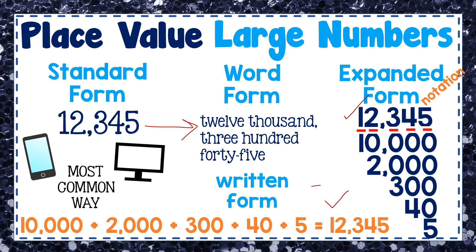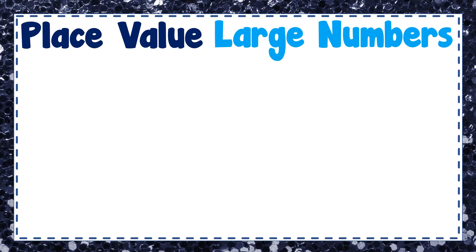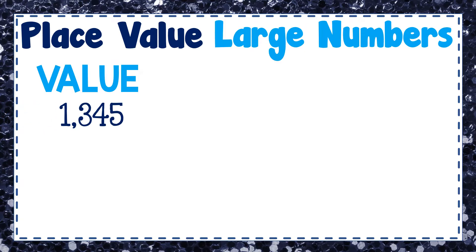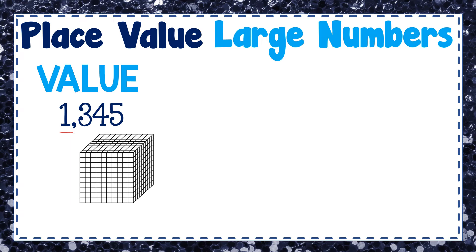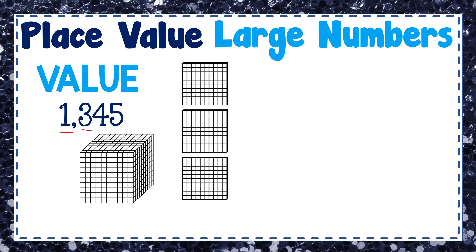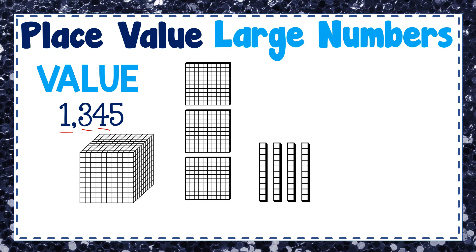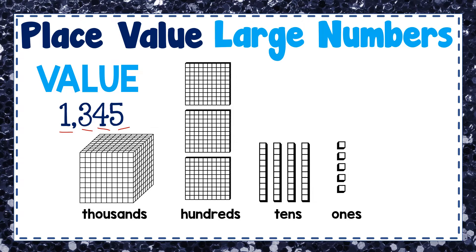I want to talk about how to represent a number's value. Let's take the number 1,345. If I were to represent its value, I would use a picture or model. For the thousands place, I'll use a thousands cube. To represent three hundreds, I'll use hundred flats. Four tens I'll represent using rods or ten sticks, and five ones using five ones units. These are the models used for the thousands, hundreds, tens, and ones places.